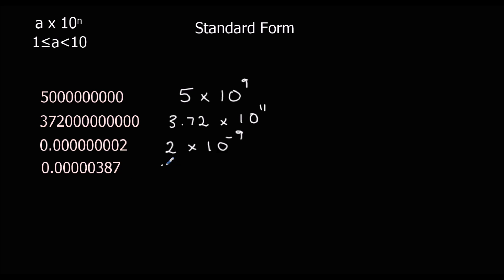And finally, 3.87. Going back 1, 2, 3, 4, 5, 6 times — divided by 10, 6 times. So it's a negative power: 3.87 times 10 to the power of minus 6.